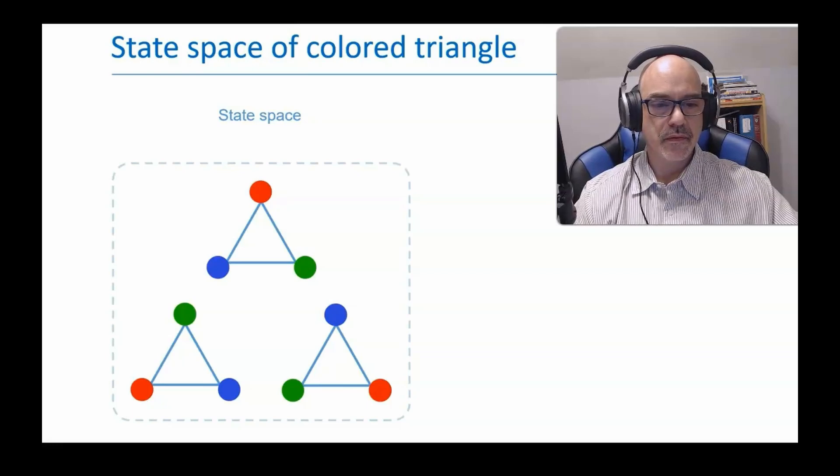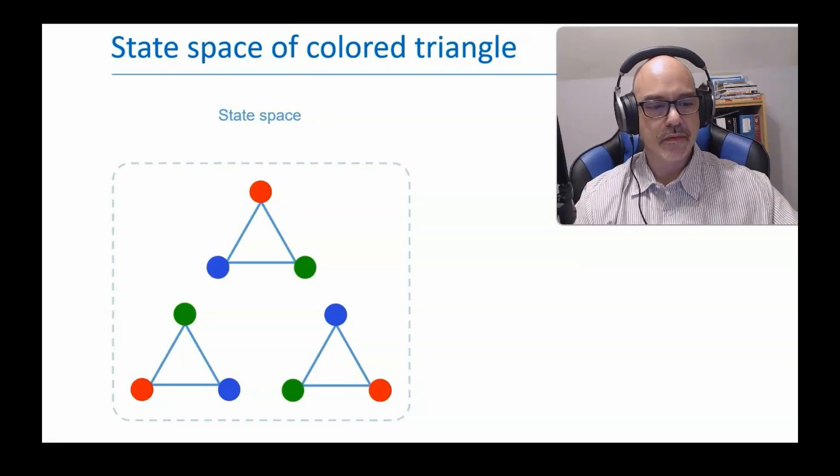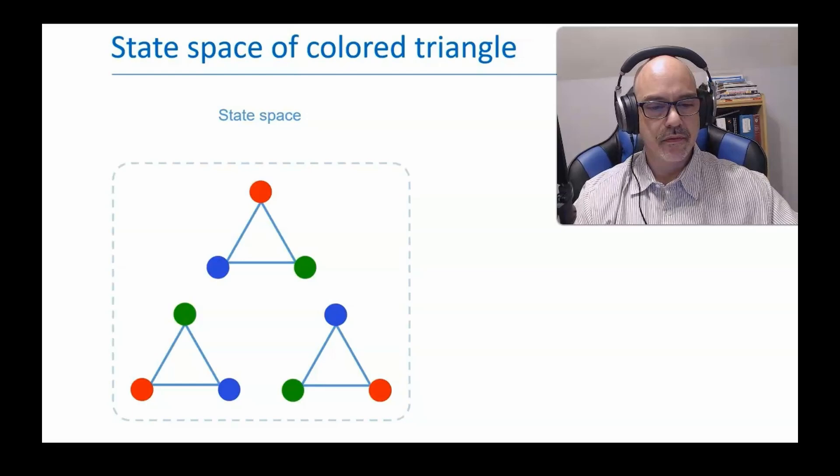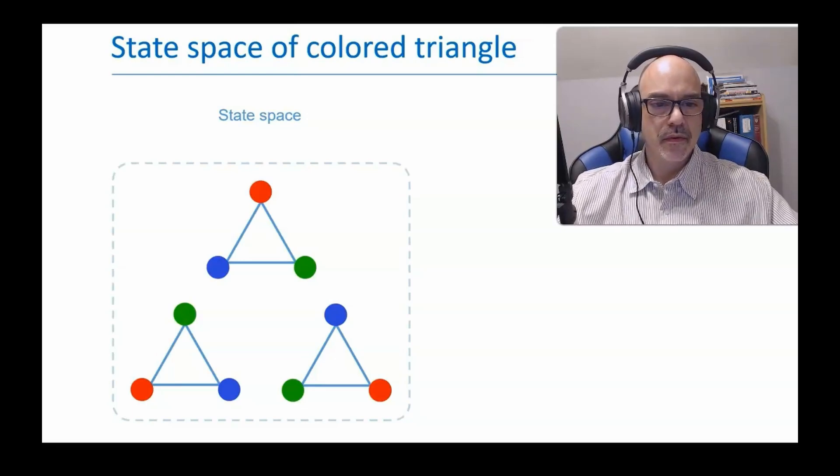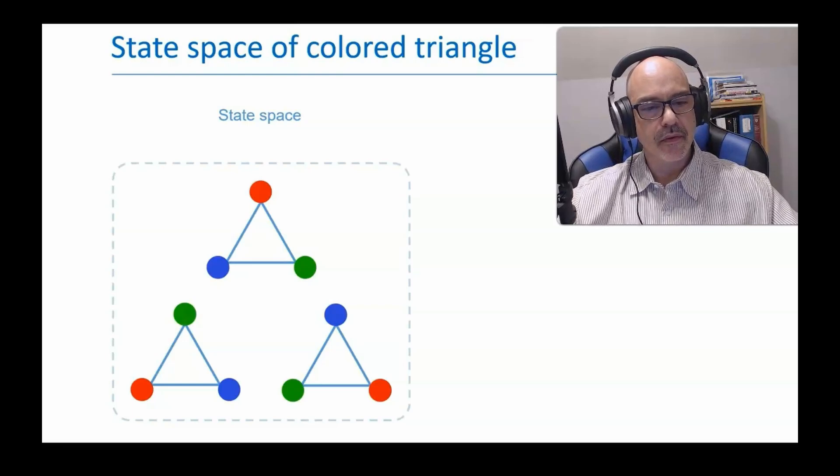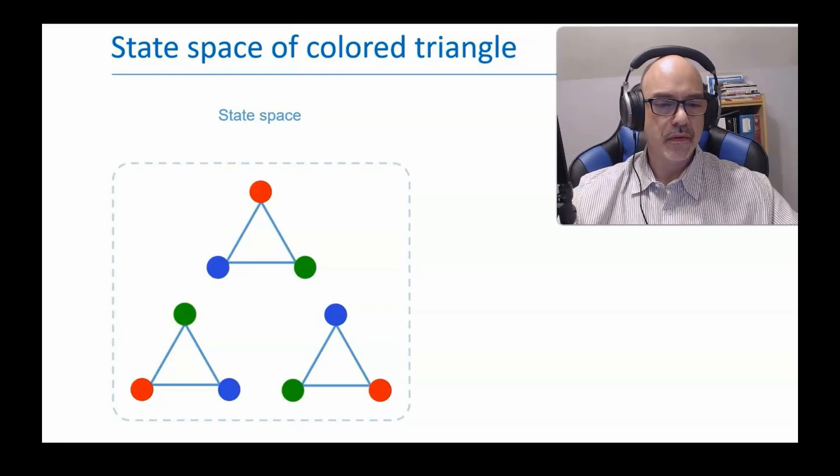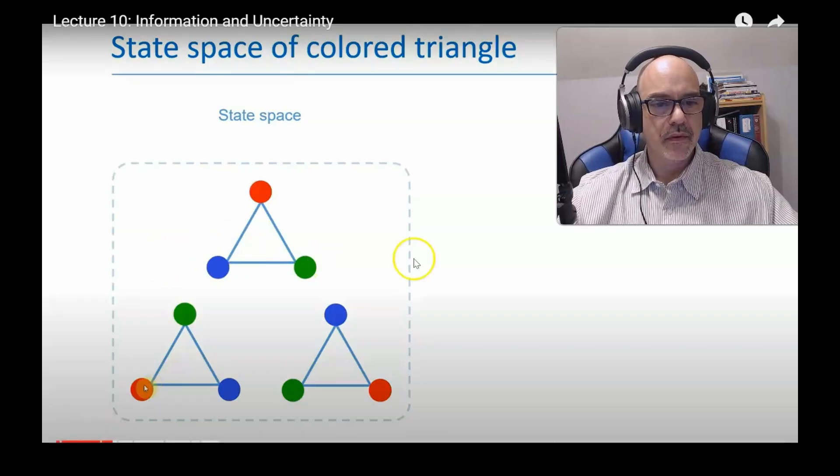For now, we're assuming that the triangle cannot rotate to any other angle, and so these three states are the entire state space of the triangle. We'll call the states by the orientation of the red vertex: red up, red right, red left.